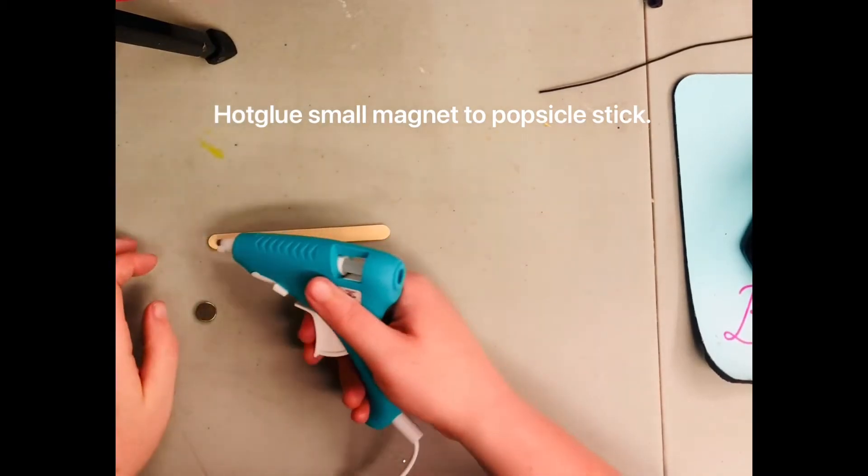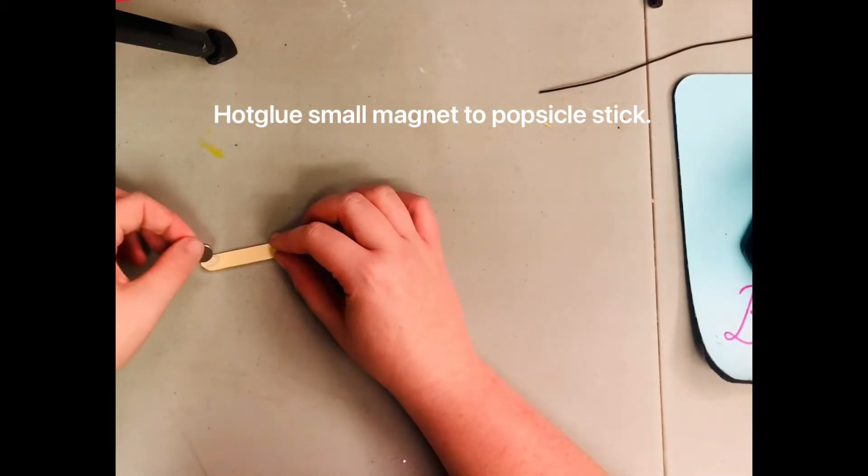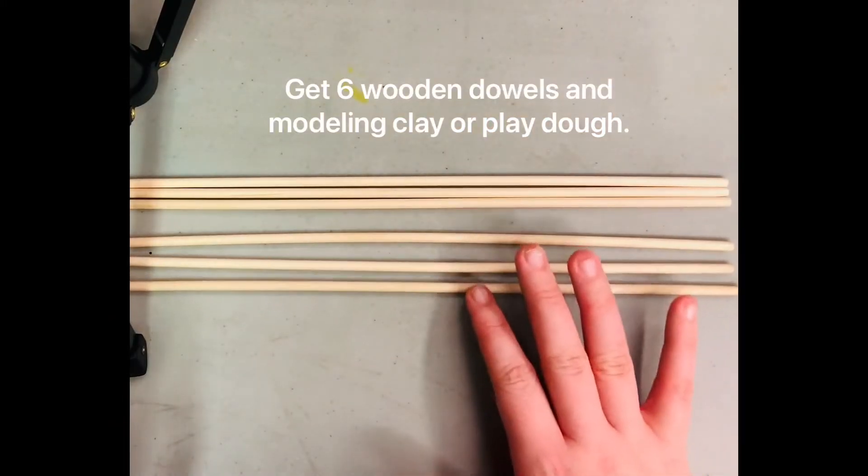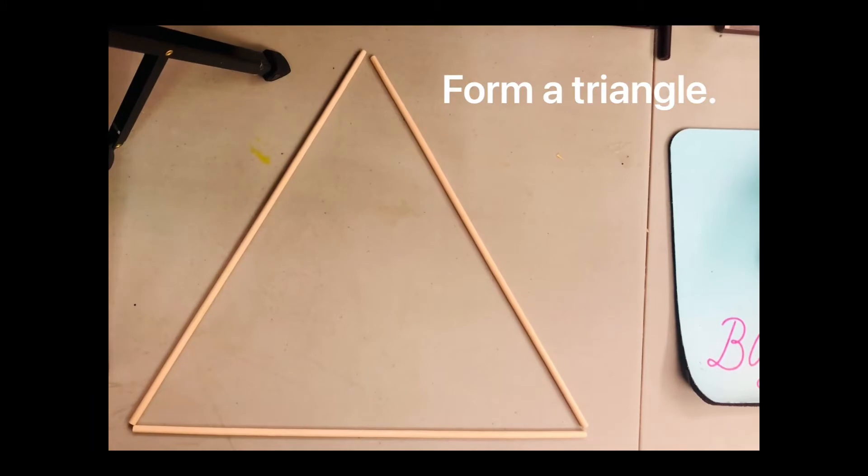Next we'll make a magnet wand by hot gluing a small magnet to a popsicle stick and then we'll set this aside. Grab six wooden dowels and some clay. Form a triangle with three dowels.